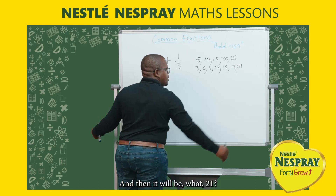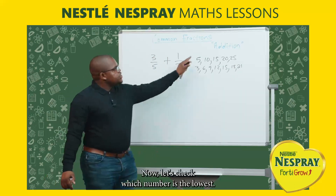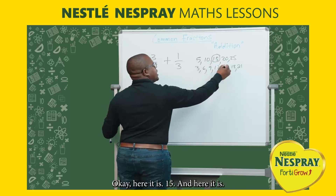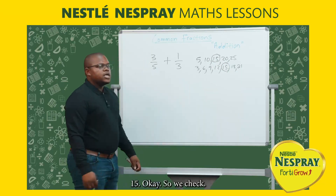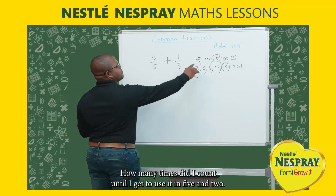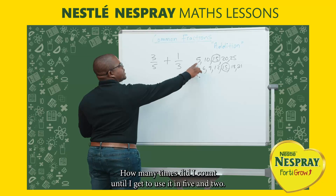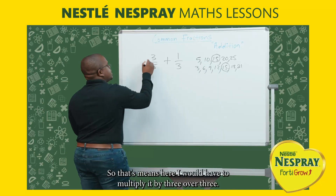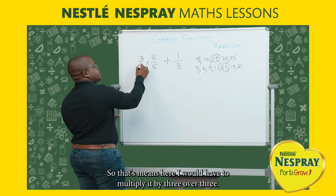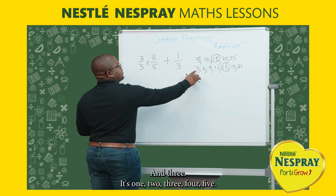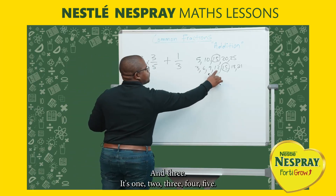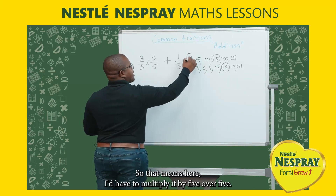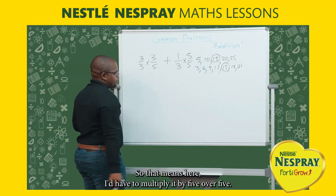The lowest common number is 15 — it appears in both lists. Counting up to 15 using 5: 1, 2, 3 times, so I multiply the first fraction by 3 over 3. Counting up to 15 using 3: 1, 2, 3, 4, 5 times, so I multiply the second fraction by 5 over 5.